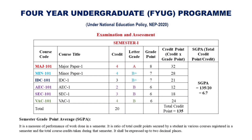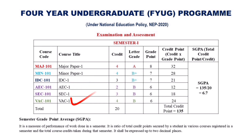Let us see how to calculate the SGPA. For example, suppose a student has six papers: Major Paper 1, Minor Paper 1, IDC/MDC, AEC, SEC, and VAC, having 4, 4, 3, 2, 3, and 4 credits respectively. The student has secured letter grades of A, B+, B+, B, B, and B respectively.